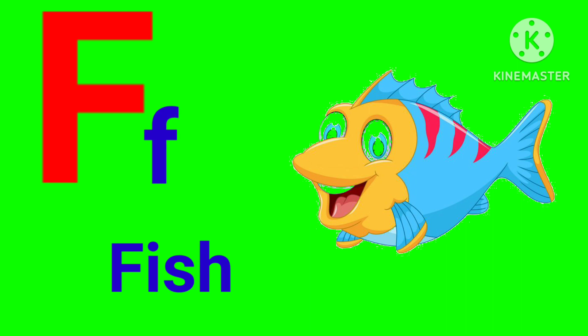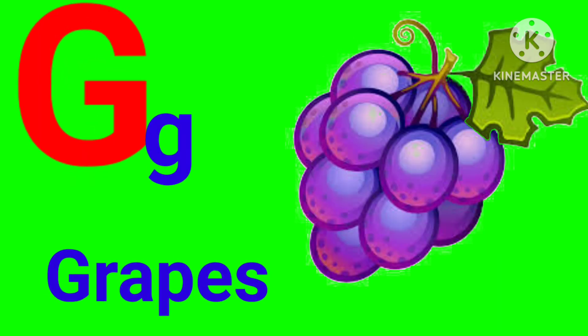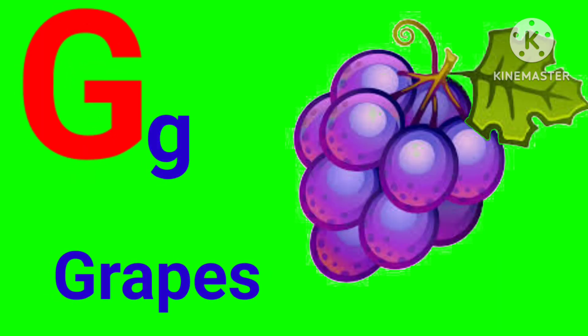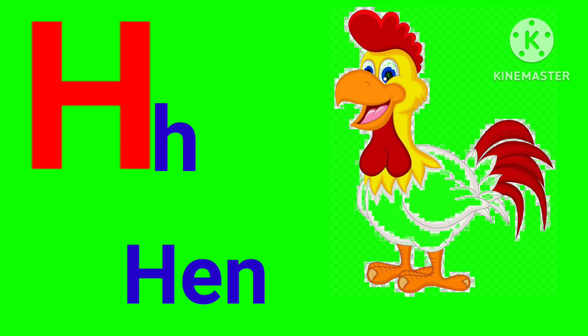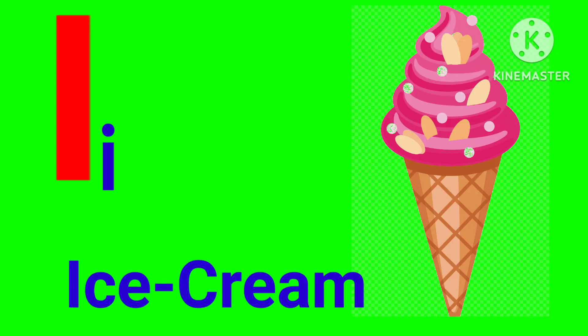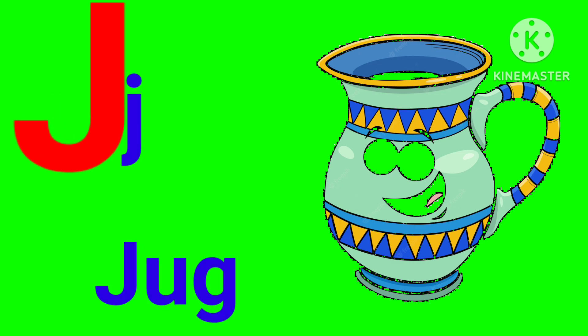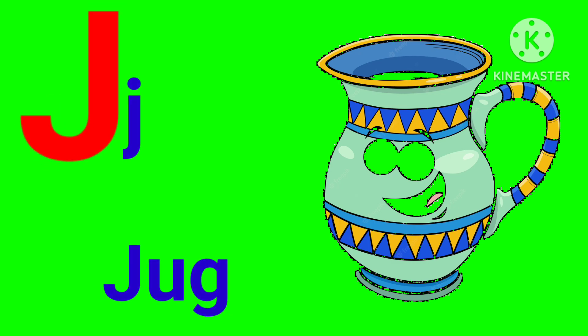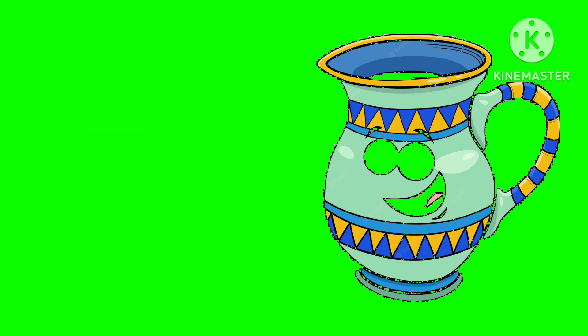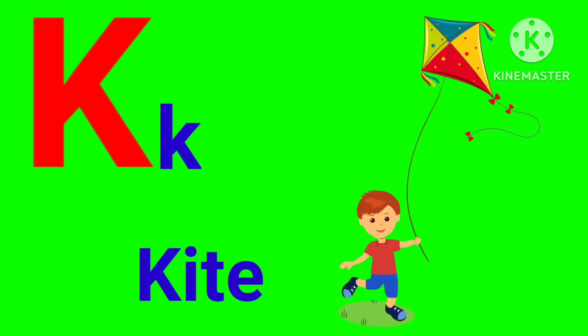F for fish, G for grapes, H for hen, I for ice cream, J for jug, K for kite.